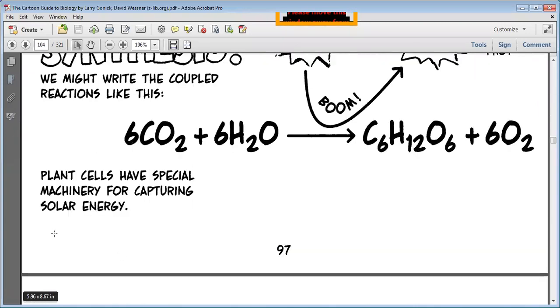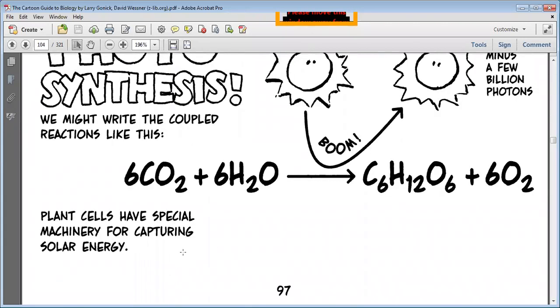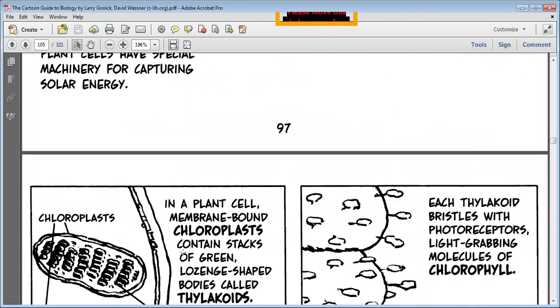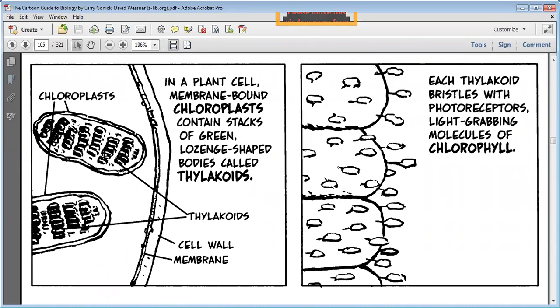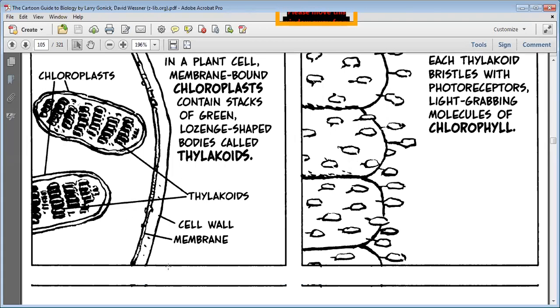Plant cells have special machinery for capturing solar energy. You know which part of the cell? Mitochondria, powerhouse of the cell. And see this chloroplast, green pigments. Thylakoids you have studied. Chloroplast in a plant cell, membrane-bound chloroplast contains stacks of green lawn-shaped bodies called thylakoids. These are long thylakoids which are green. Chloroplast present in the cell membrane and cell wall.